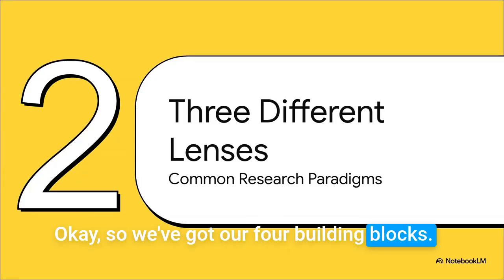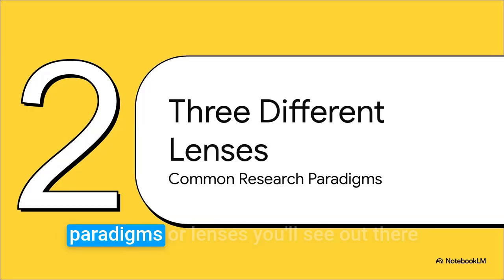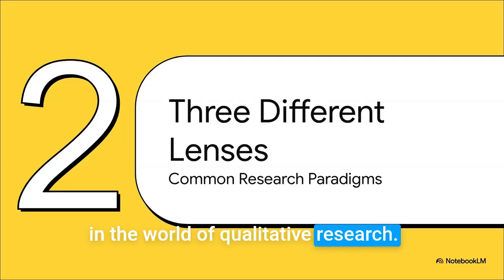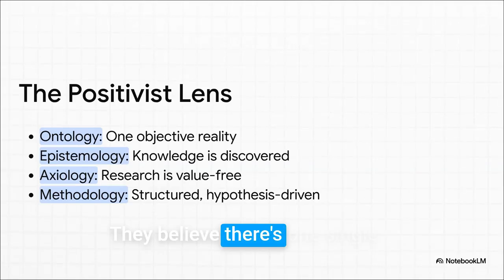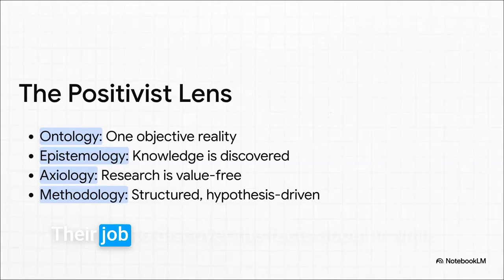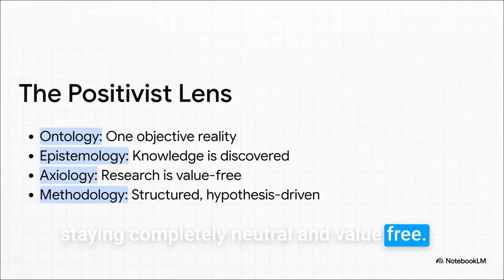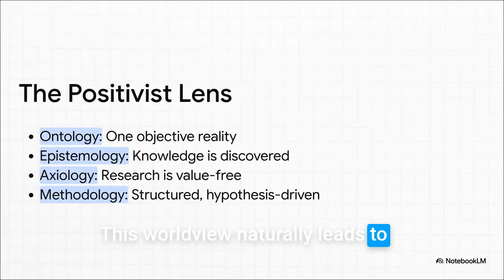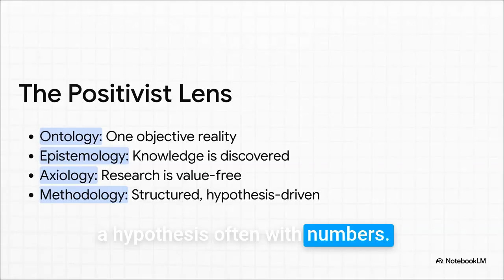So we've got our four building blocks. Let's see how they actually come together to create three of the most common paradigms, or lenses, you'll see out there in the world of qualitative research. First up, we have the positivist lens. Think of a scientist with a powerful telescope. They believe there's one single objective reality out there. Their job? To discover the facts about it while staying completely neutral and value-free. This worldview naturally leads to really structured methods, like testing a hypothesis, often with numbers.